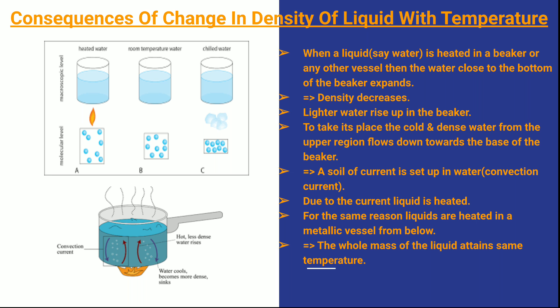When the heated liquid rises up in the beaker, a space is created. To take its place, the cool and dense liquid from the surroundings and the top of the beaker comes down from the upper region and from the sides to the base. This creates a sort of current in the setup, which is known as convection current.